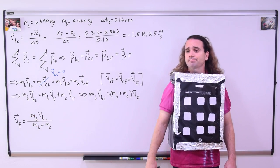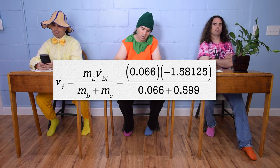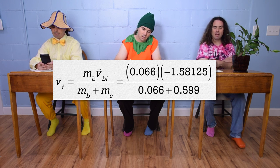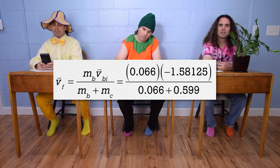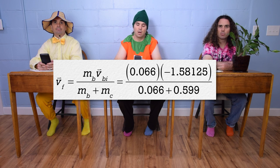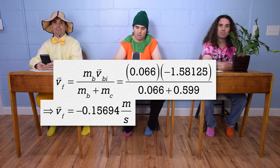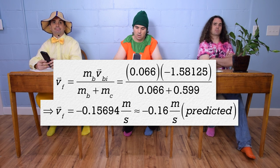Bo, could you please plug in the numbers? The mass of the ball is 0.066 kilograms. The initial velocity of the ball is negative 1.58125 meters per second. And the mass of the cart is 0.599 kilograms, which means the predicted final velocity of both the cart and the ball is negative 0.15694, or with two significant digits, negative 0.16 meters per second.